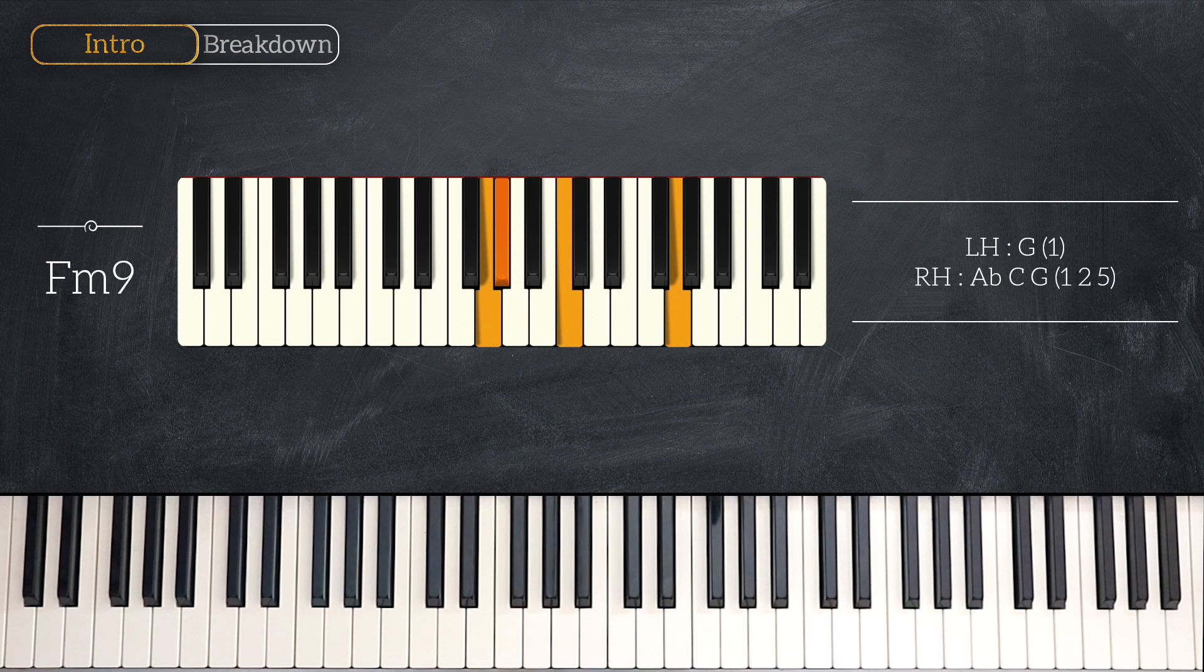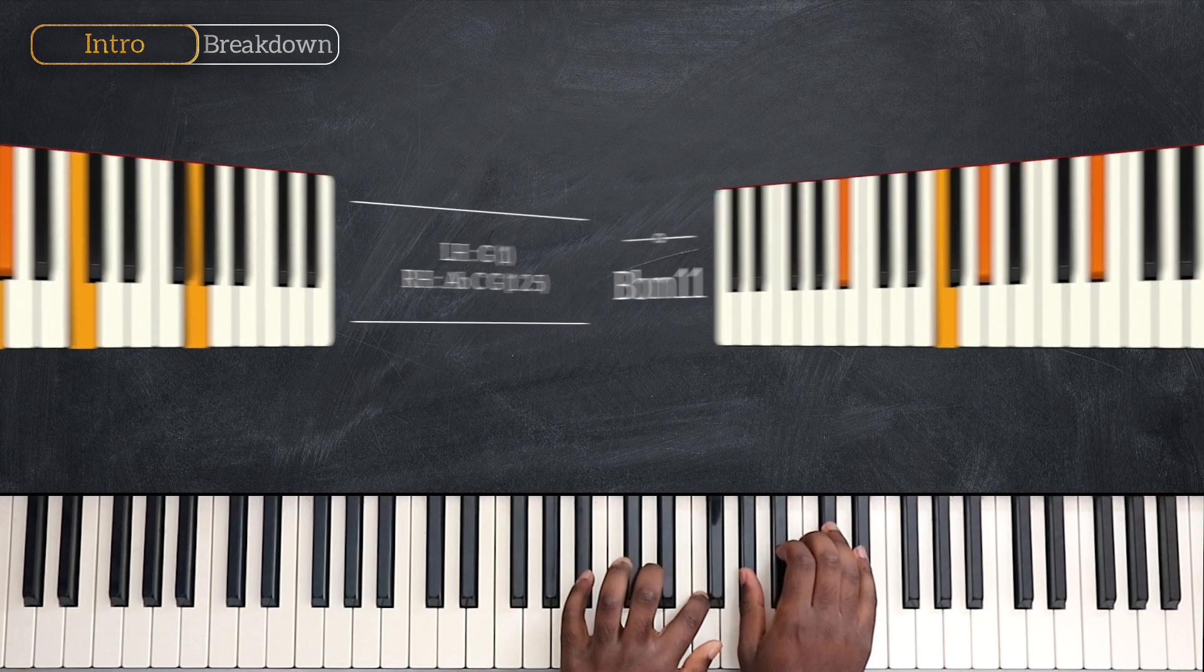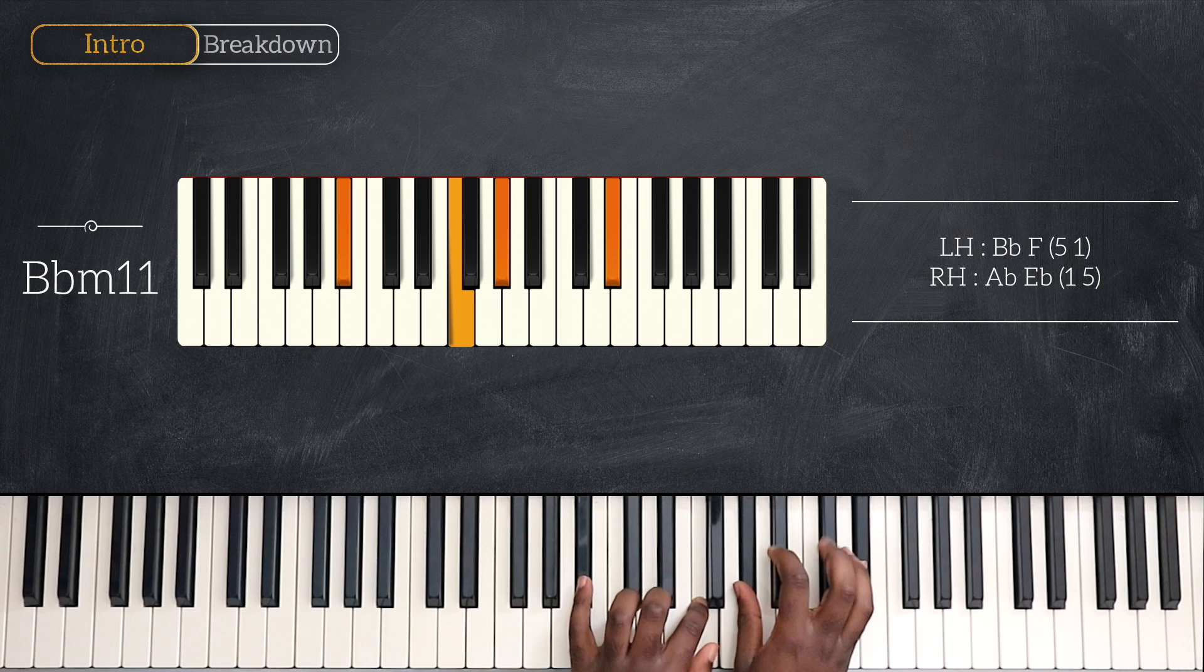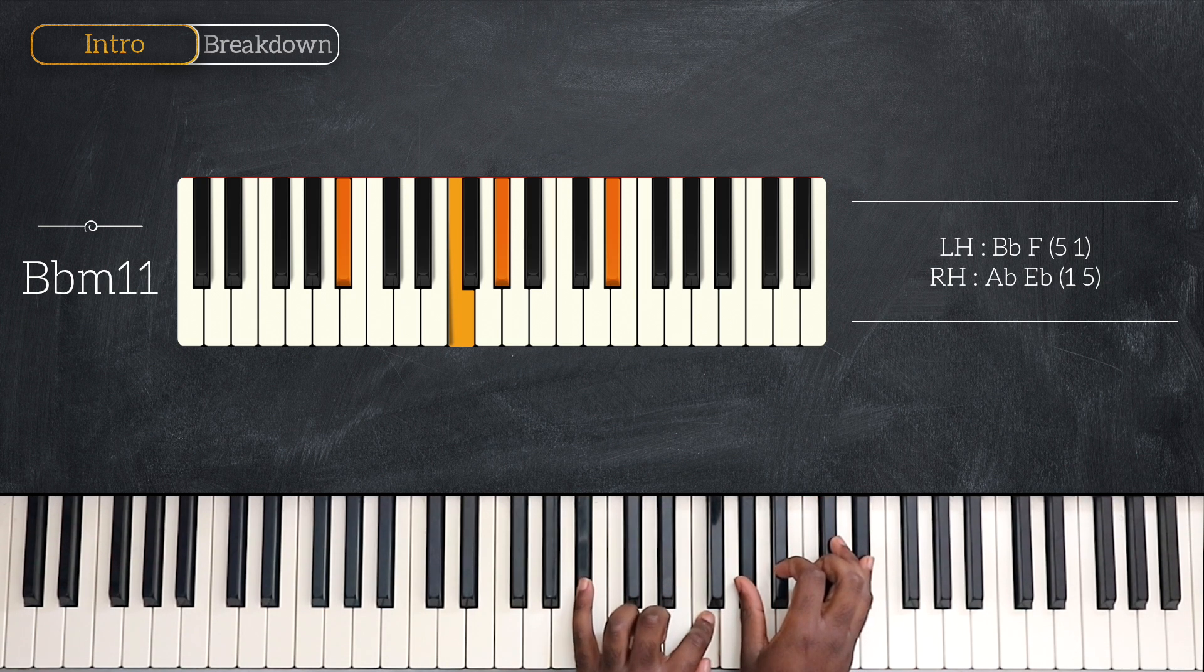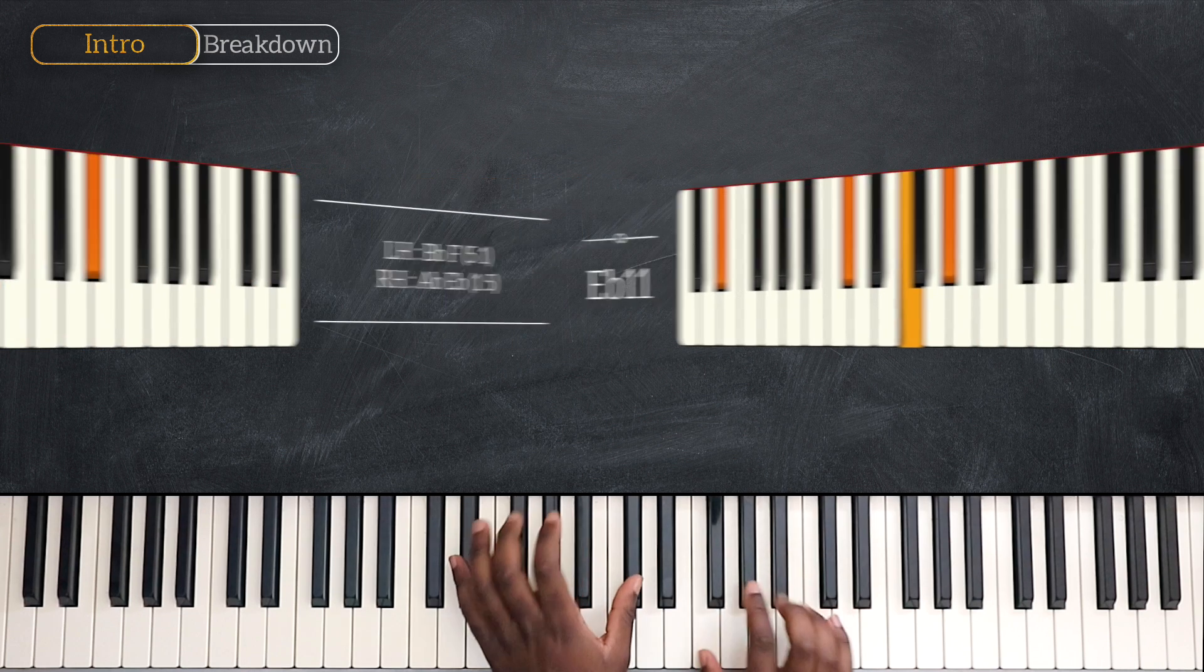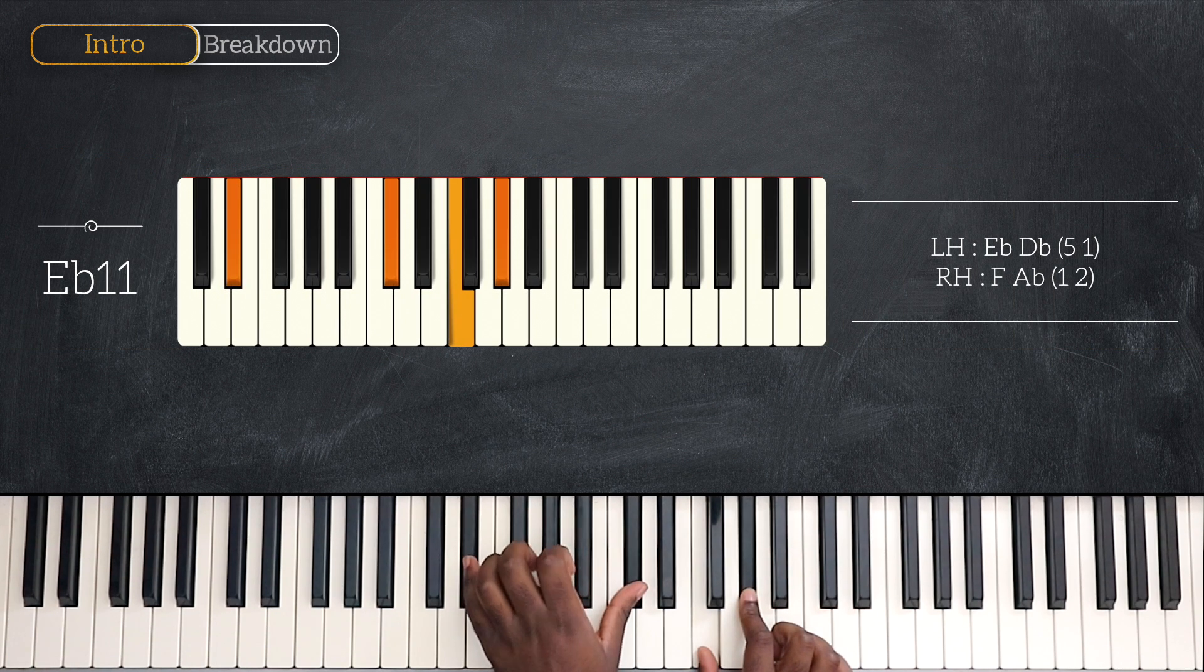After that, we have B flat minor 11: B flat and F, A flat and E flat. Followed by E flat 11: E flat and D flat, F and A flat.